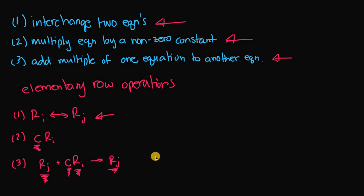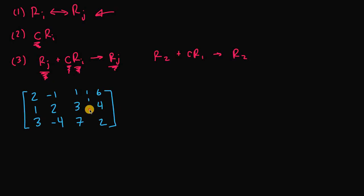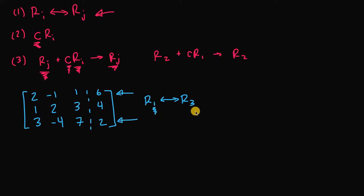For example, we could take row two and add to it a non-zero constant times row one, yielding a new r2. To get practice using these elementary row operations, let's do an example. Given this augmented matrix, we want to perform the row operation r1 interchange with r3 — meaning we take row one and switch it with row three.